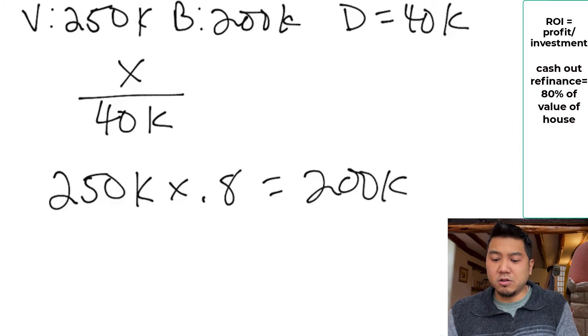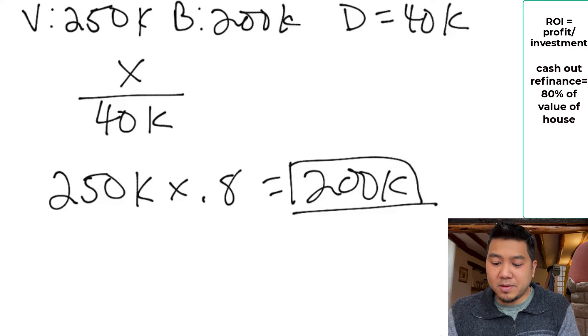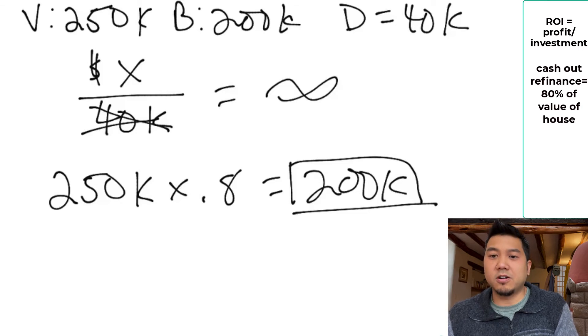Guess what? You bought the house for $200,000. You had to put $40,000 down. Now, the bank's giving you a full $200,000. That means you no longer have any money in the property. So now any dollar that you make from this property is infinite ROI.